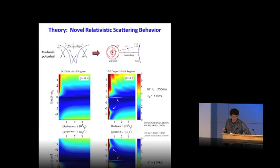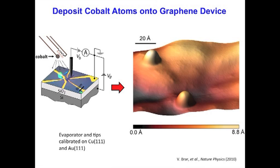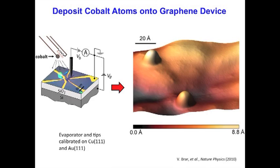Motivated by this, we dropped atoms down onto graphene. One of the first atoms we looked at is cobalt. We evaporated cobalt atoms onto a gated graphene device at low temperature so that the atoms would stick and not move around. We then took STM images — here you see an STM image of a gated graphene device on silicon oxide where you can see two cobalt atoms. We put our STM tip on top of those cobalt atoms to measure their electronic structure.